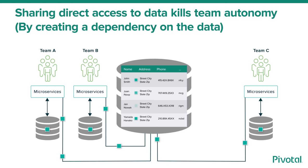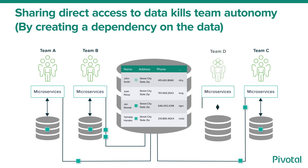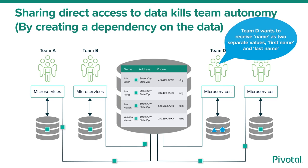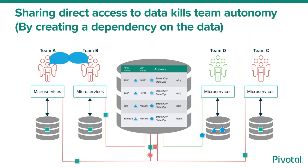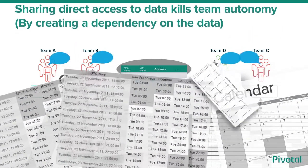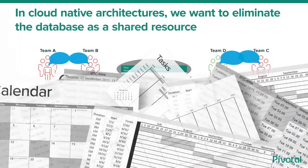A new team comes along and wants to update and receive name information in two separate fields — first name and last name. If we change the database schema, we have taken care of the new team, but this constitutes a breaking change for all the other teams who are still depending on name information in a single field. The way around this is to coordinate the change across all teams, requiring teams to link up their development, test, and release schedules — exactly the type of team interdependency that causes delays and slows down software delivery.